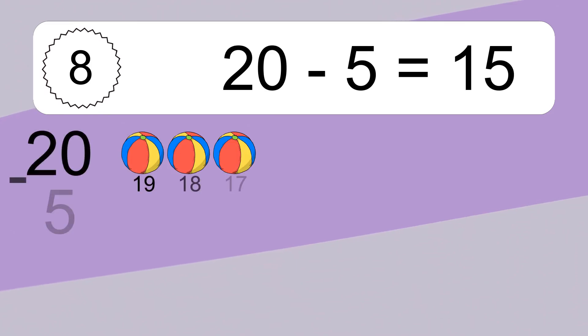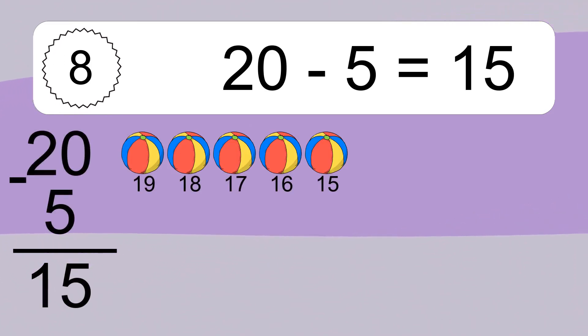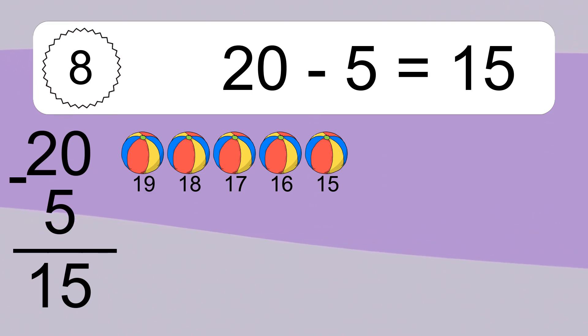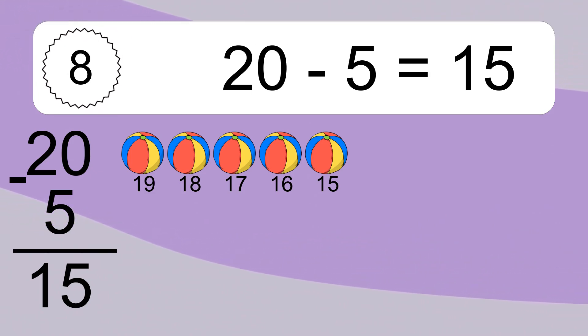20 minus 5 equals 15. Let's count it. 19, 18, 17, 16, 15.